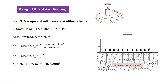The next step is to find the net upward soil pressure. Net upward soil pressure Qu equals total factored load divided by area provided. The factored load is 1500 kN and the area provided is 5.76 m² (2.4 × 2.4). Therefore, Qu = 260.41 kN/m², which is 0.26 N/mm².